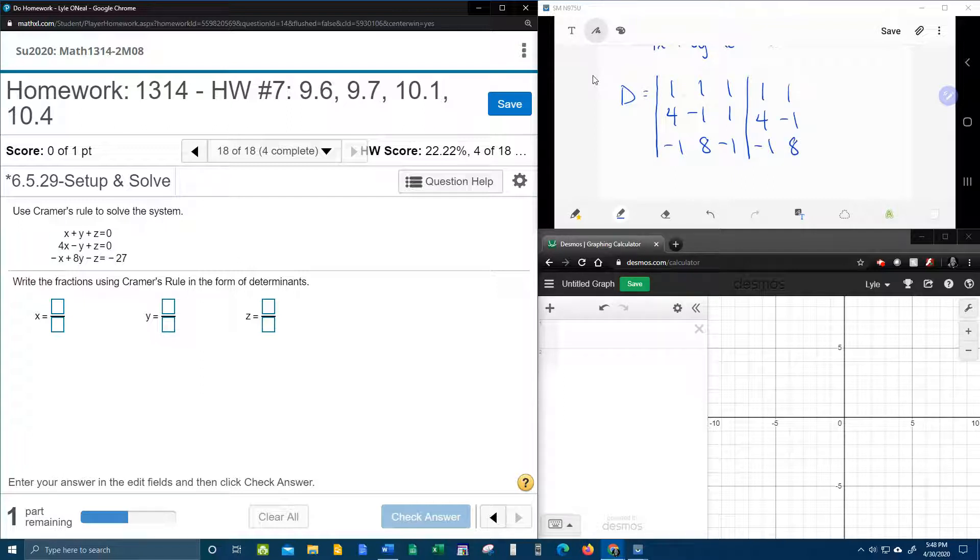Now we're going to have to find the determinant of this 3 by 3 matrix. I've done this in a previous video, so what I'm going to do is demonstrate the shortcut again. The shortcut says that you take the first two columns, the 1, 4, negative 1, the 1, negative 1, and 8. You copy and paste those outside the matrix so that the shortcut will work. And then we're going to multiply down on the diagonal.